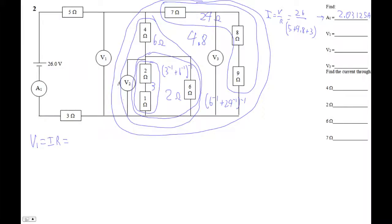V1 is IR. So that's going to be this current, which goes through the 5, goes through this mess. We understand that it's more than one resistor, but for the purposes of V1, it's just one resistor. It's a 4.8 ohm resistor. So it's going to be that current, 2.03125 times 4.8, which is 9.75. I love that.